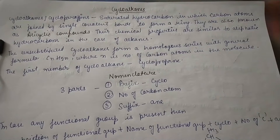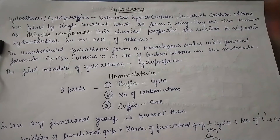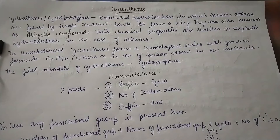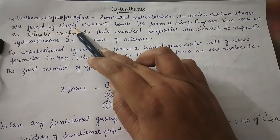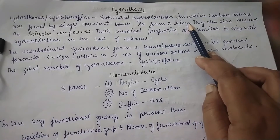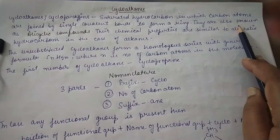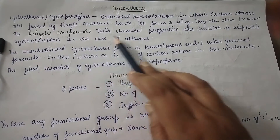Dear students, let's discuss cycloalkanes. Cycloalkanes are also called cycloparaffins. They are saturated hydrocarbons in which carbon atoms are joined by single covalent bonds to form a ring. They are also known as alicyclic compounds.